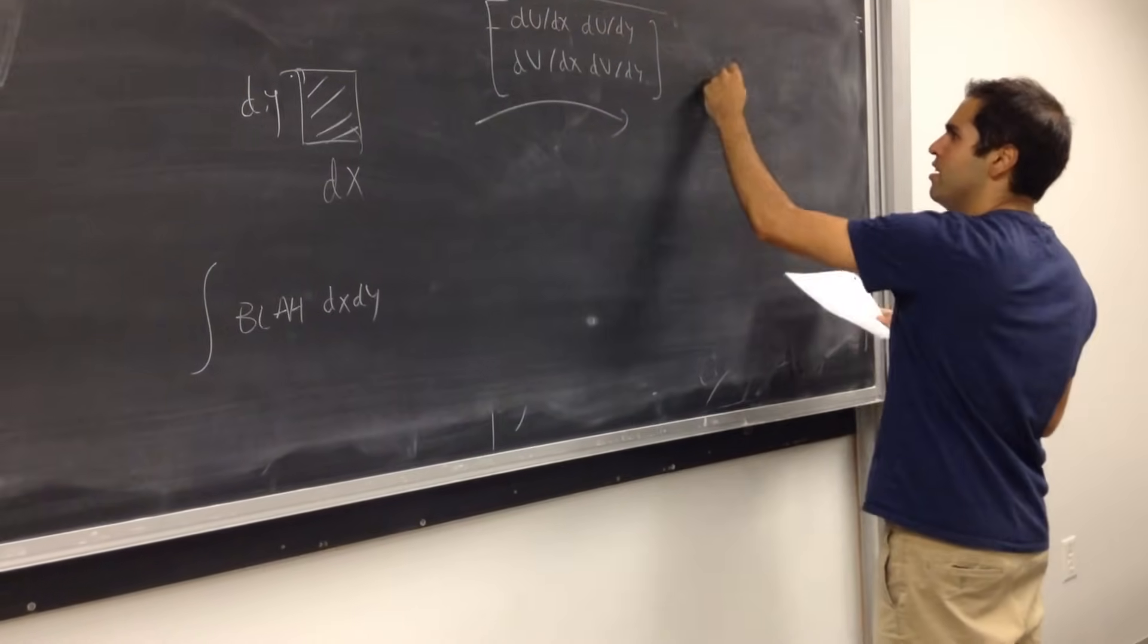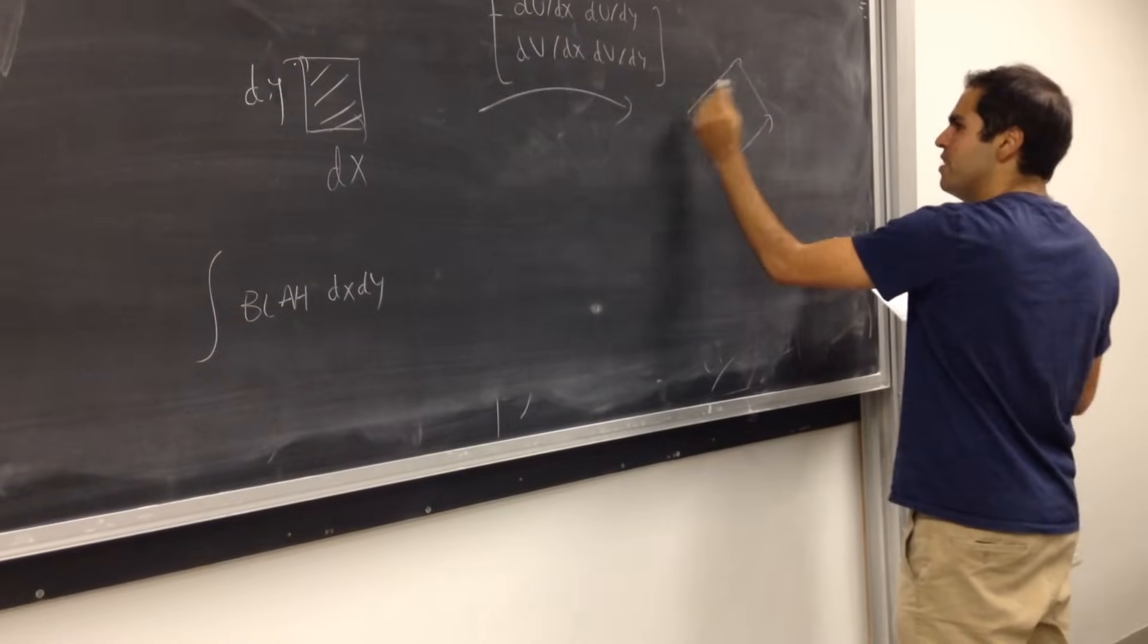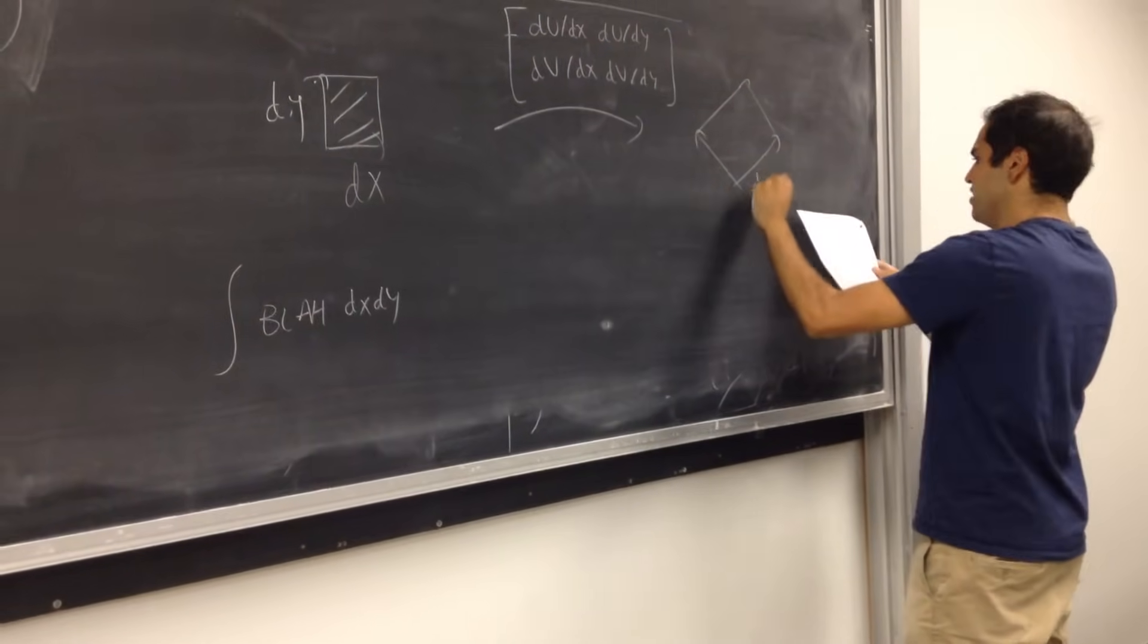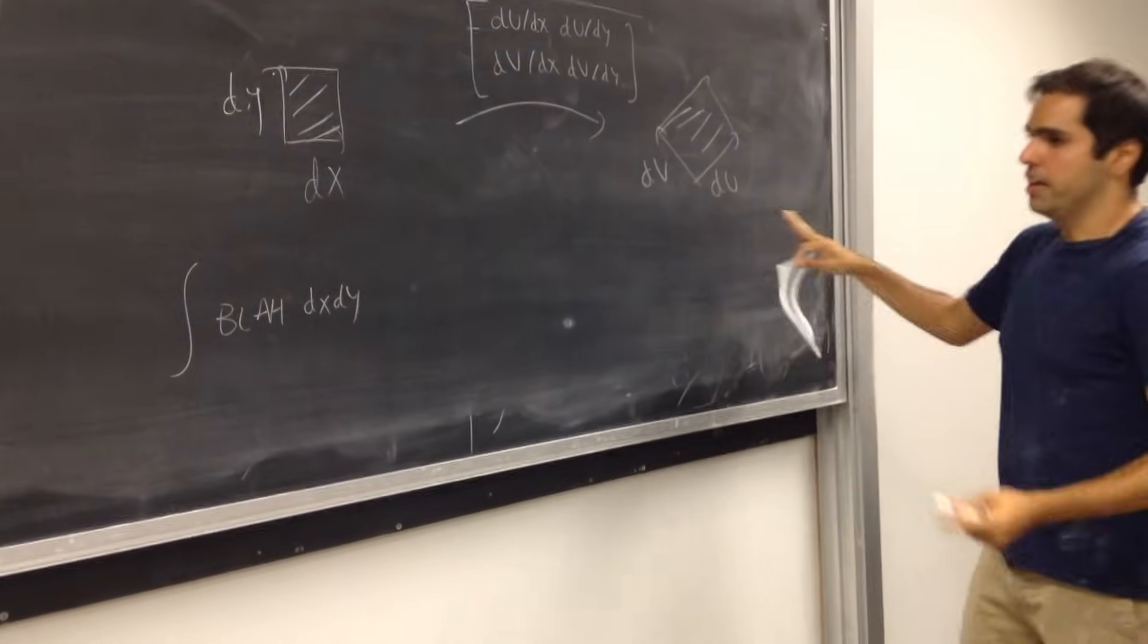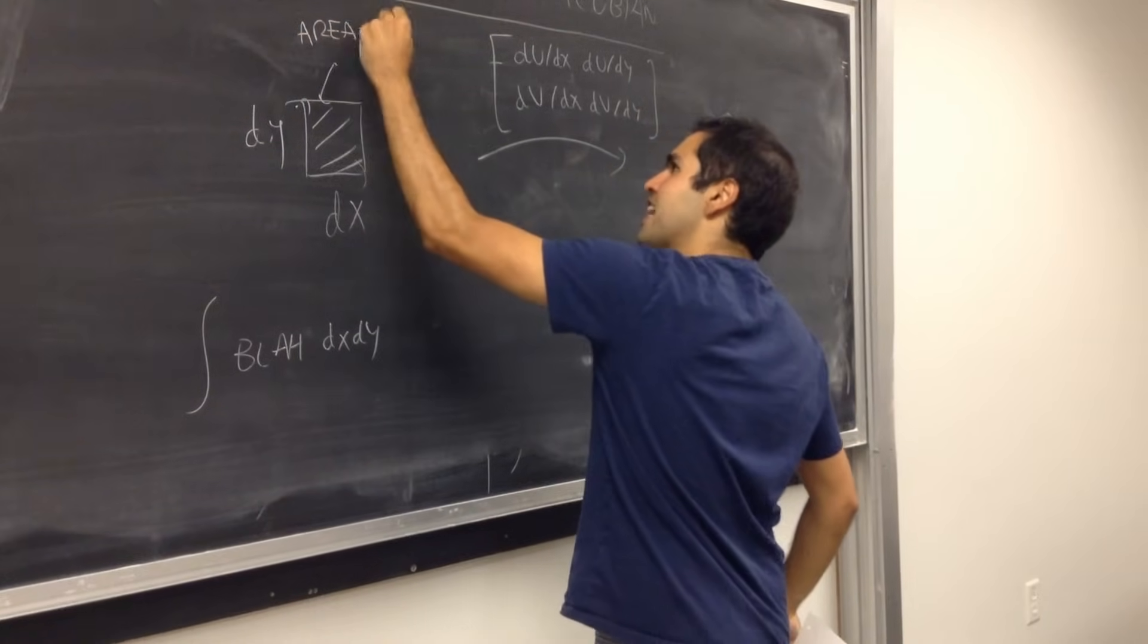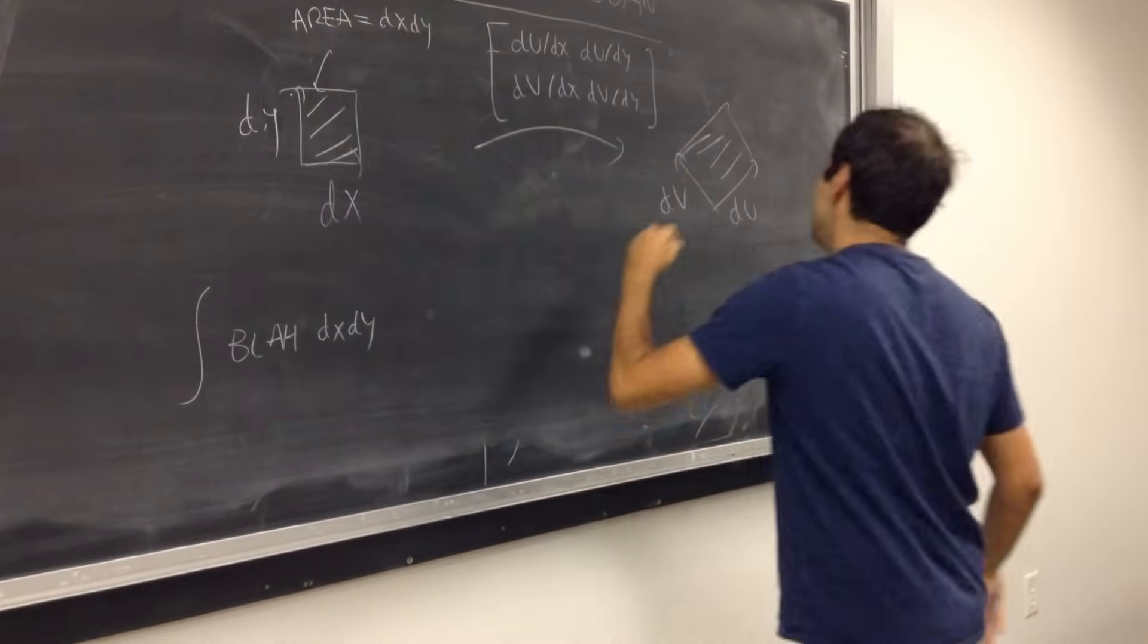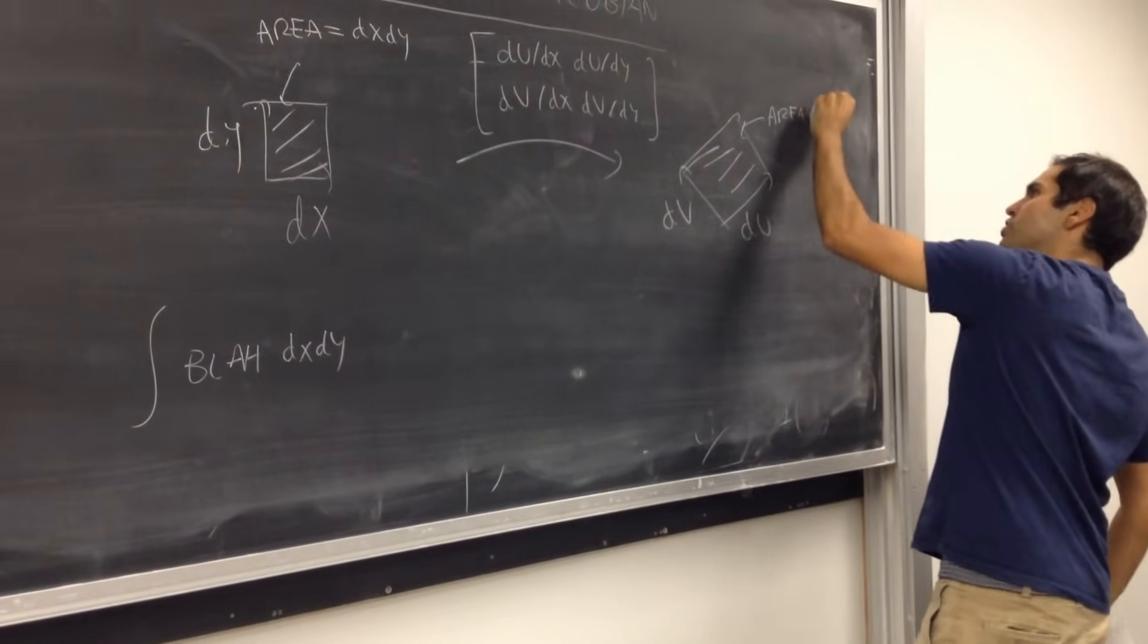maybe a parallelogram or something, with sides du and dv. All right, and then this area is just dx dy, and this area is du, dv.